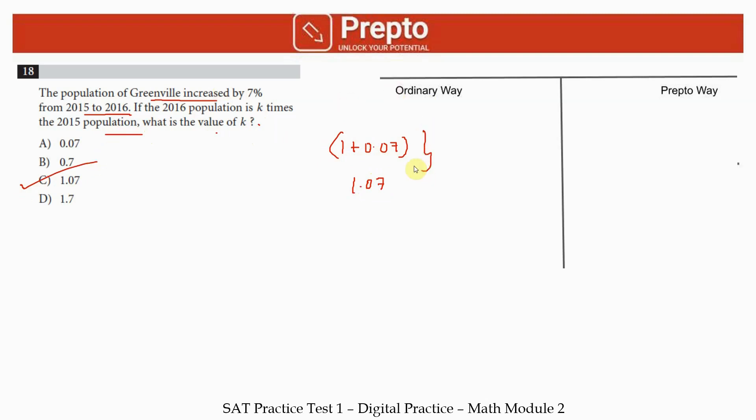In the Prepto way, whenever you have a percentage, you can substitute the value of 100. Say let's start with 100 people in 2015. This grows by 7, which is 7, so in 2016 you'll have 107. How much is 107 as a ratio of 100? It's 1.07. So in the Prepto way you quickly get 1.07 without dealing with equations.